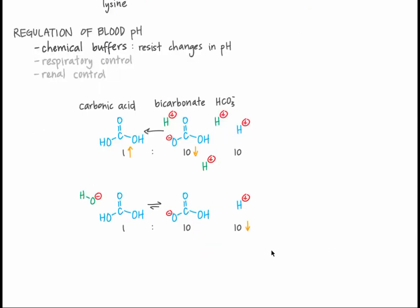Likewise, if the pH of the blood increases — if the hydronium ion concentration decreases — there's less H+ around and relatively more OH- around. These hydroxide ions can take H+ from carbonic acid, forming bicarbonate. As a result, the OH- concentration decreases. There's less hydroxide that can take H+ from hydronium, so hydronium concentration increases. This increase in hydronium decreases pH. So buffers respond to an increase in pH by decreasing pH.